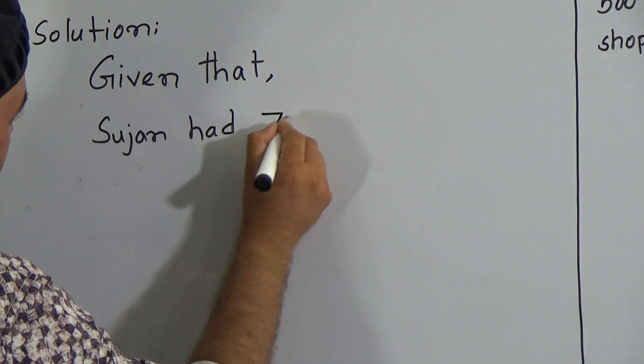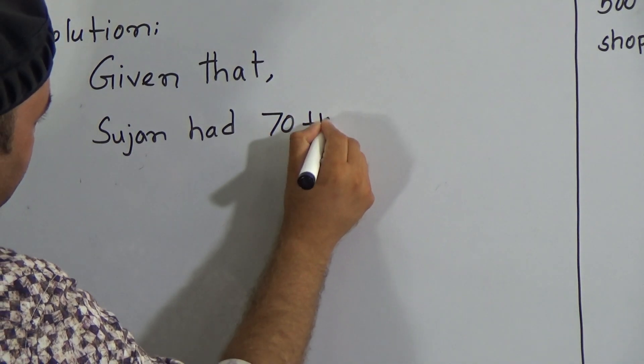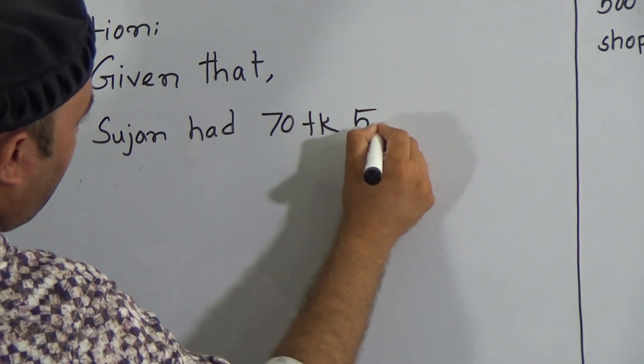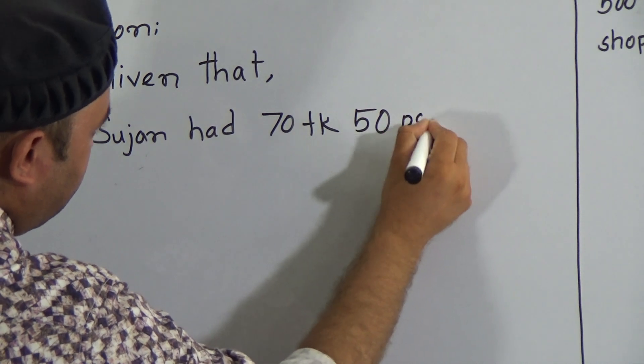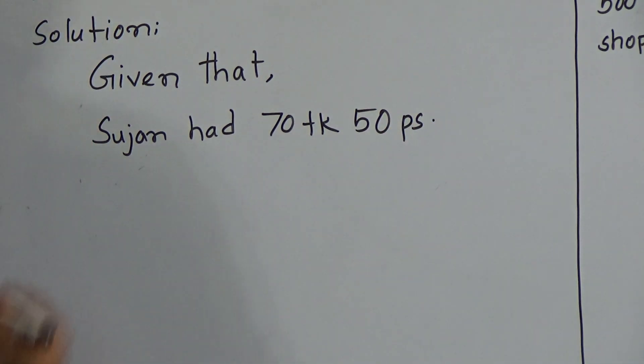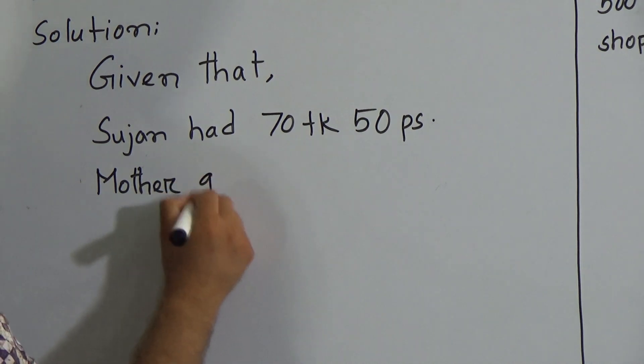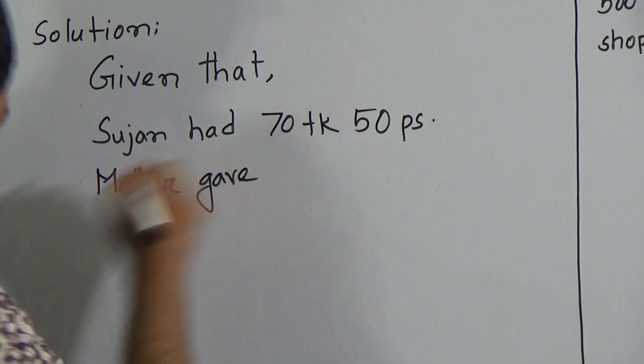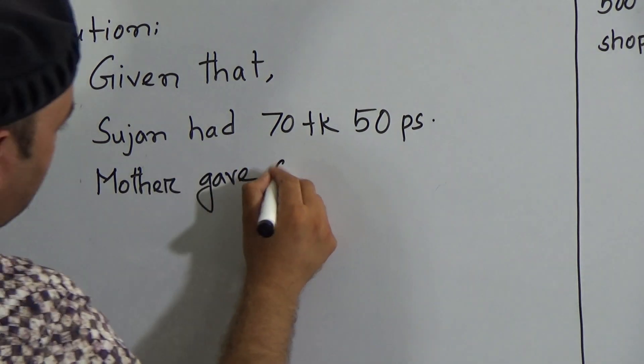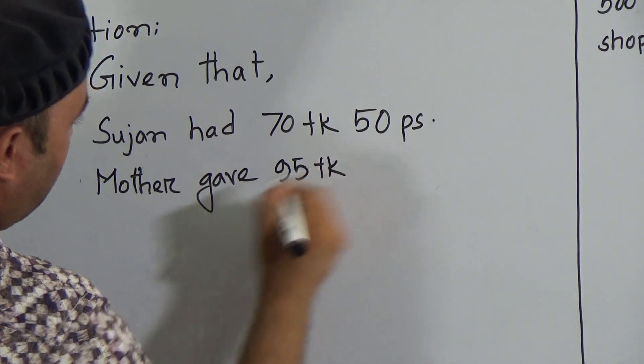Given that: Sujan had 70 taka 50 poises and his mother gave 95 taka to buy fish.